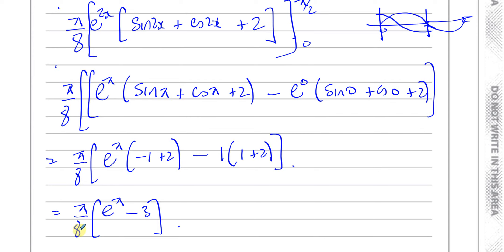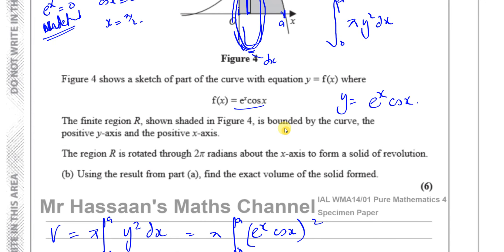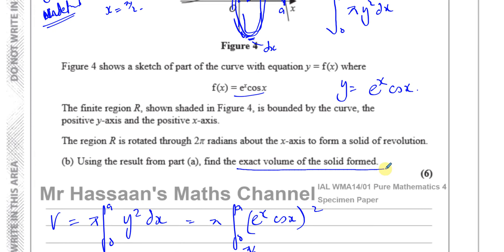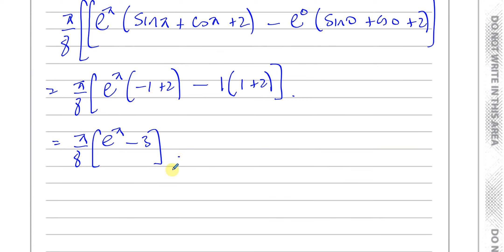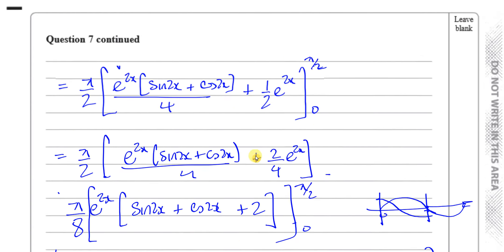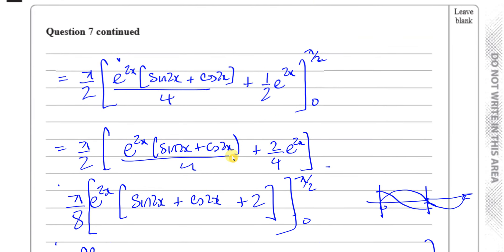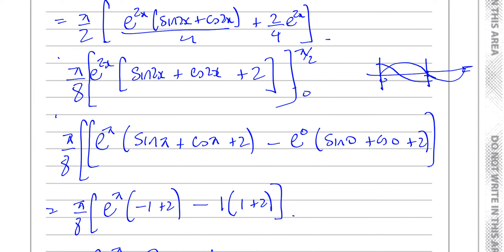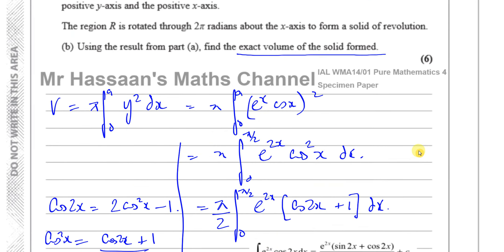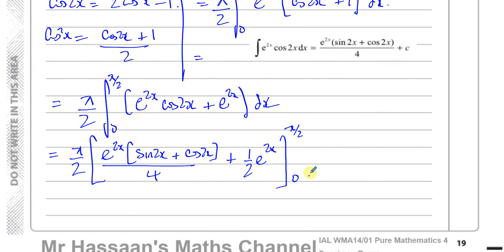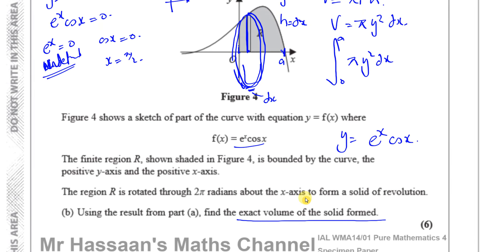And there is the answer: (π/8)(e^π − 3) units cubed. That's the exact volume of the solid formed when the region is revolved 360 degrees around the x-axis. If you couldn't find the result in part A, it doesn't mean you throw away those marks — you can use that result as given here and continue to get the answer.